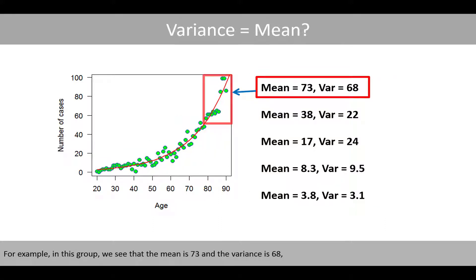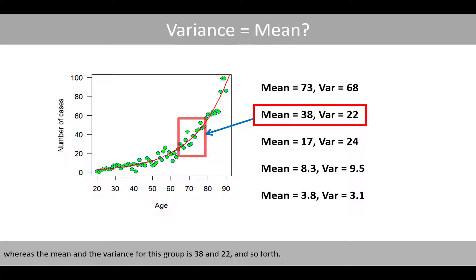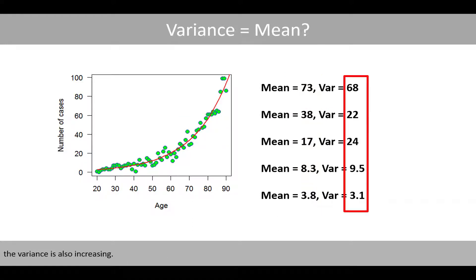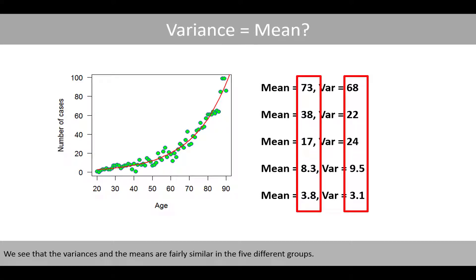For example, in this group, we see that the mean is 73 and the variance is 68, whereas the mean and the variance for this group is 38 and 22, and so forth. Just as we would expect from a Poisson distribution, when the mean is increasing, the variance is also increasing. We see that the variances and the means are fairly similar in the five different groups.